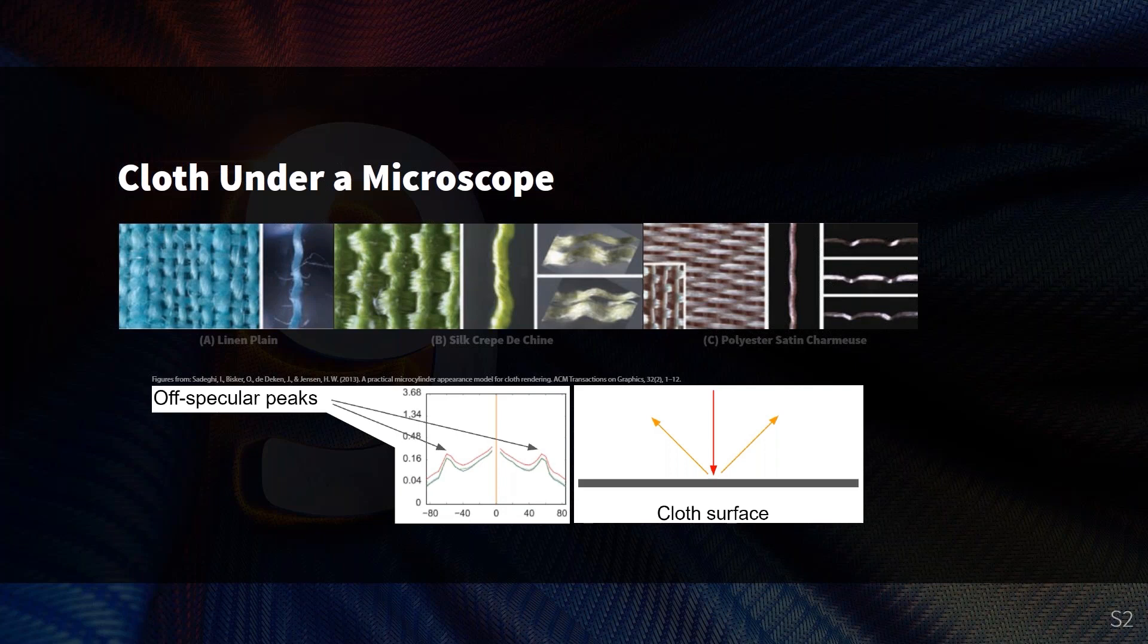This is called specular splitting, because you have two highlights, and also it's off-specular because it's not located in the usual place. This is not something you normally find on other types of materials, but for cloth, and in particularly shiny textiles such as silk and satins, it's actually quite common. If you look closely the next time you see a piece of cloth, you'll probably be able to notice this.